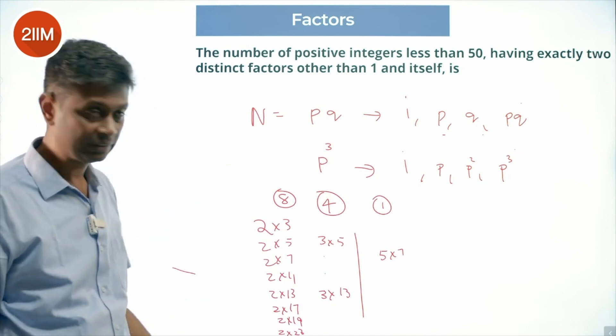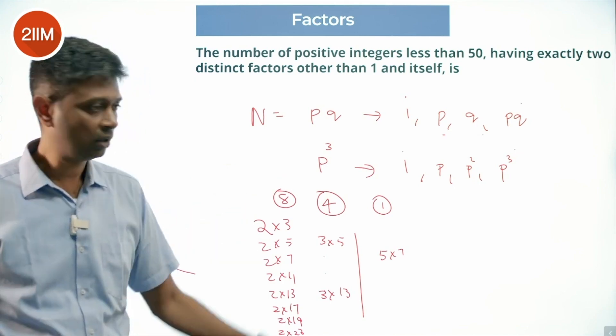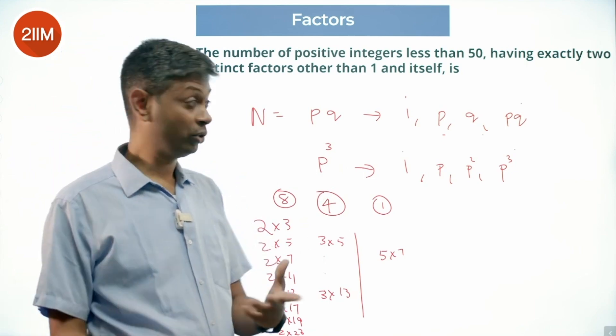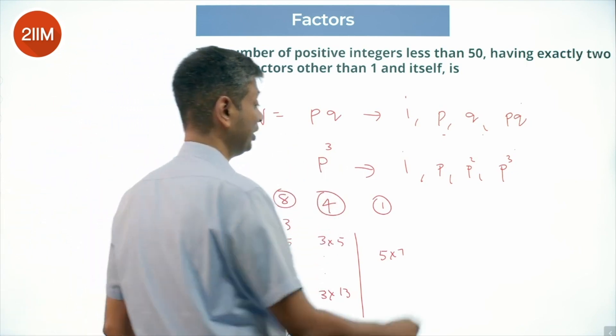All of these numbers, 8 of them, plus 4 is 12, plus 1 is 13. I almost marked down 13 because I completely forgot about p³.